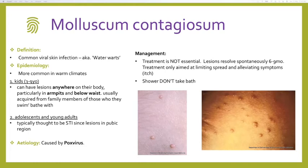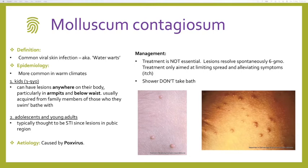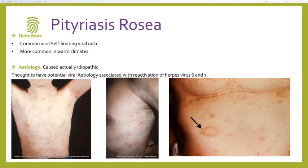Molluscum contagiosum — a common viral skin infection also known as water warts, most commonly seen in kids or anyone who shares towels or bath water; can also be sexually transmitted between adults. It presents as small round dome-shaped papules with a central umbilication and pearly skin-coloured appearance. They can be itchy when they regress. Treatment is usually not essential — they resolve spontaneously. Prevention of transmission is key: shower rather than bathing together, don't share towels.